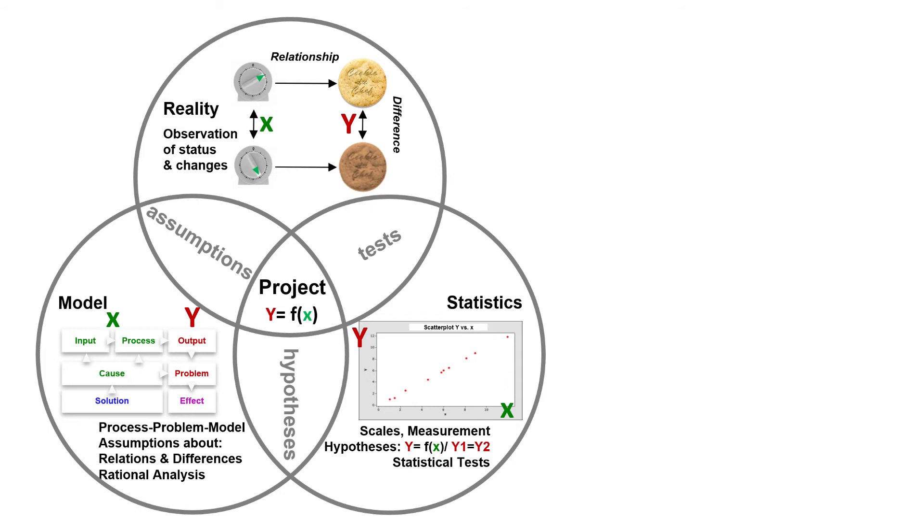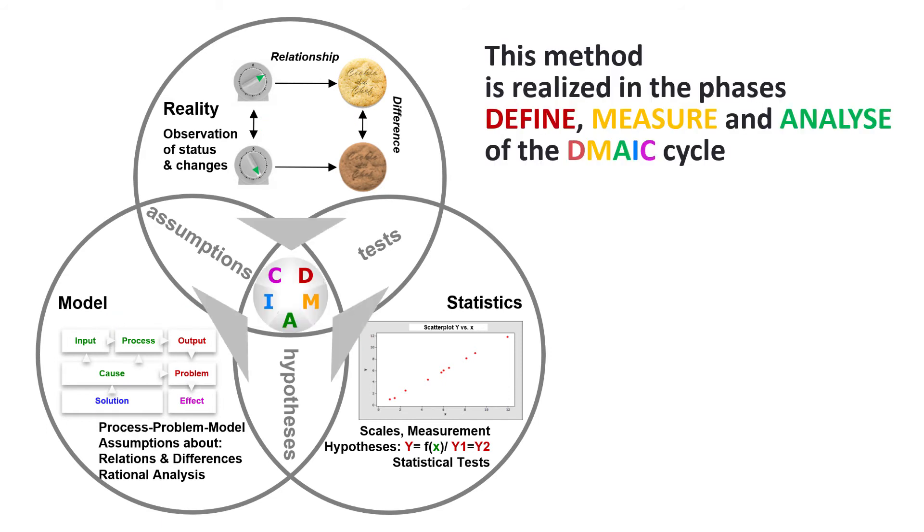Statistical tests on the collected data then confirm or reject the observations of our reality. This method is mapped in the first three phases, define, measure, analyze of the DMAIC cycle and concretized by associated tools.